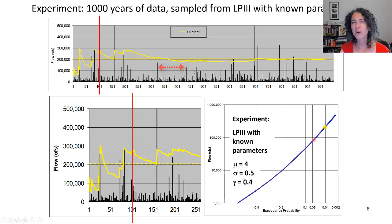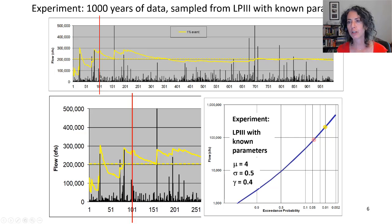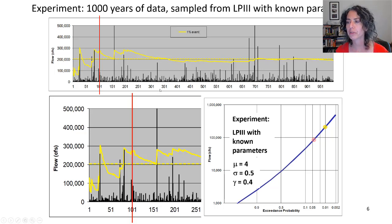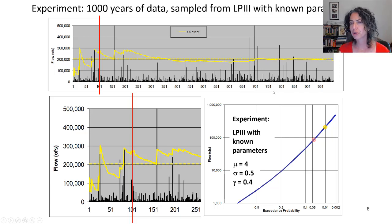Why is that happening? The problem is that those two samples were not representative of the population. Looking across this data set, there are many periods of time where the limited sample we might observe is just not representative of the population. It doesn't make the values wrong; it just means that as a sample, they don't capture the population that well.